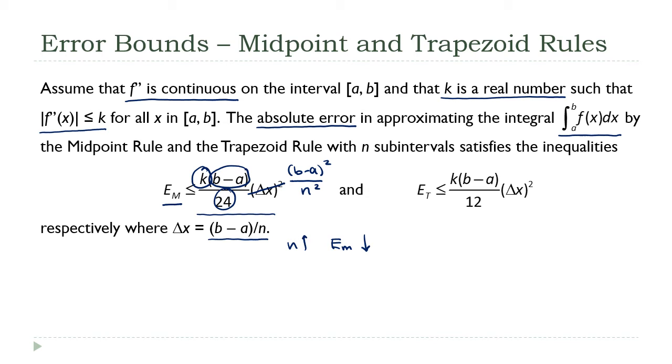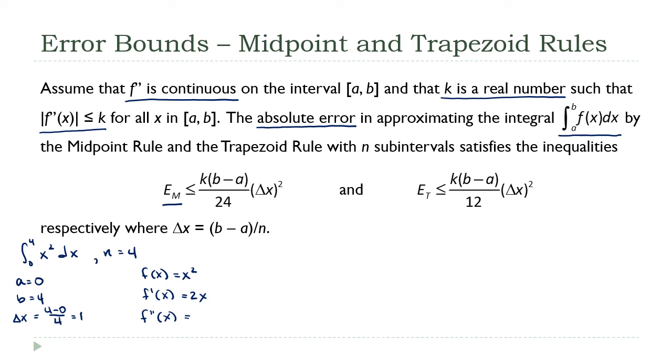All right. So what I'd like to do now is calculate these upper bounds for the two scenarios that we talked about in the previous lectures. You remember what we were doing there. We were approximating the integral from 0 to 4 of x squared dx using four subintervals. So what values does this give us? Well, a is 0, b is 4. n is 4, which means delta x is 4 minus 0 over 4, which is 1. All right. So that's everything we need for our formula there, except k.